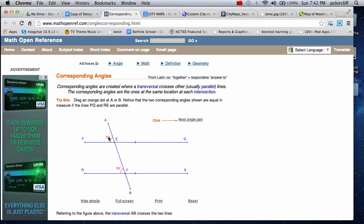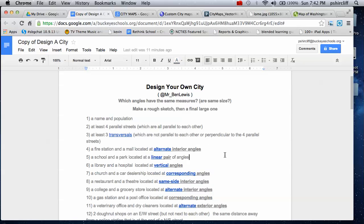North is the top, west is the left. So those would be both on the northwest corner of their respective intersections - corresponding, same location, different place.